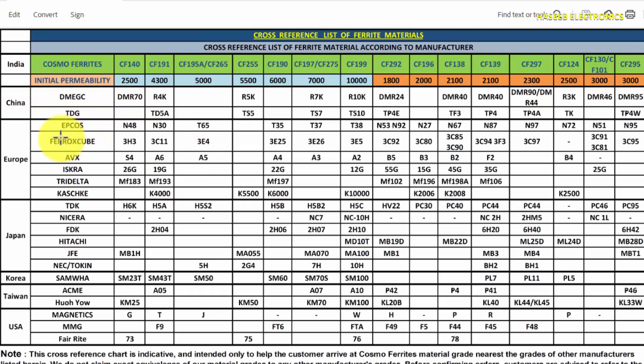Then there is China, Chinese manufacturers, Europe, Epcos, Ferroxcube, then Japan TDK, Hitachi, Korea, Taiwan, USA. Magnetics Incorporation is U.S., USA manufacturer. It has its numbers L, R, P, like that.